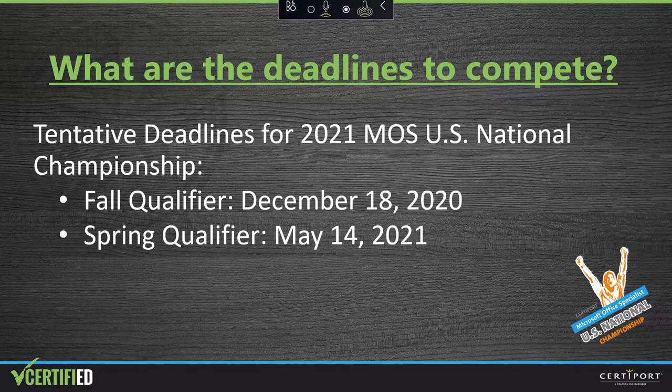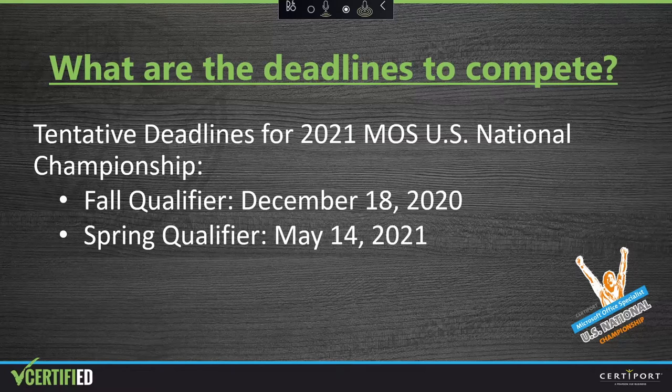There are two qualifying periods for the Microsoft Office Specialist U.S. National Championship. The tentative deadline for the Fall Qualifier is December 18, 2020. The tentative deadline for the Spring Qualifier is May 14, 2021. After each qualifying period, invitations are issued to the students with the top scores in each exam track per state. The same process is followed after the Spring Qualifier deadline.